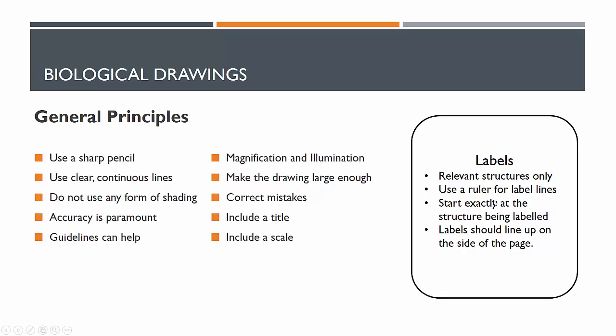On a side note, we have labels. Labels should be relevant structures only, and that's a judgment call. You need to use a ruler for labeled lines. Imagine your labels being a list of dot points, and then the lines going off to where they need to be. Your labels should be neat, which is important. The lines that they go to need to be exactly at the feature that you are labeling. I'll show you some examples now.